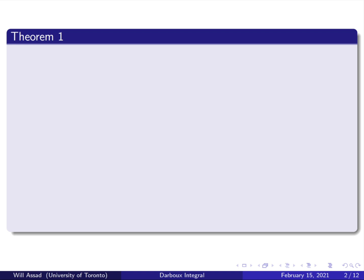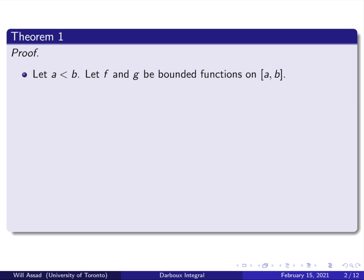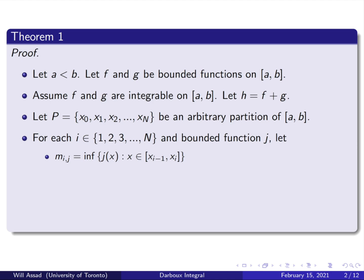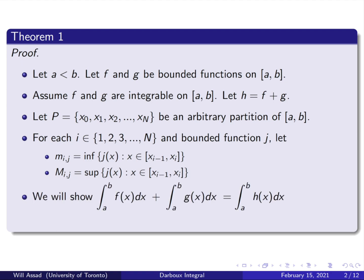Going through the theorem, let's start by writing a proof header. We let a < b, let f and g be bounded functions on the closed interval [a, b]. We're going to assume that f and g are integrable on [a, b], and we're going to let h equal f plus g. We're going to let P be an arbitrary partition of [a, b] going from x₀ all the way up to xₙ. For each i ranging from 1 to n and some bounded function j, we want to show that the integral from a to b of f(x) dx plus the integral from a to b of g(x) dx equals the integral from a to b of h(x) dx.